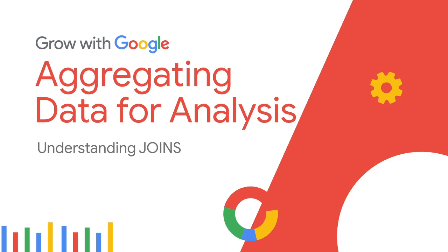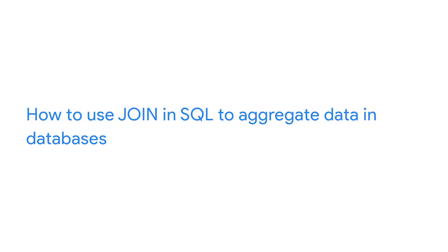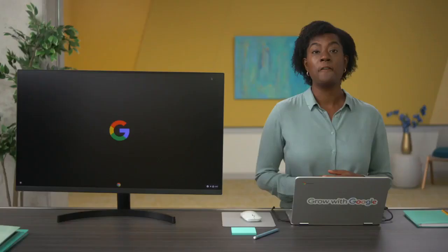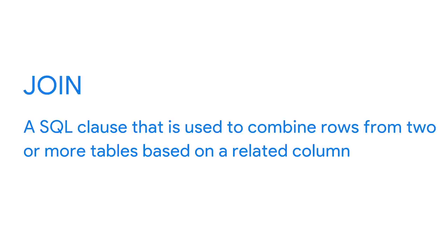We've checked out a few different tools you can use to aggregate data within spreadsheets. In this video, we'll cover how to use JOIN in SQL to aggregate data in databases. JOIN is a SQL clause that's used to combine rows from two or more tables based on a related column — basically a SQL version of VLOOKUP. There are four common JOINs data analysts use: Inner, Left, Right, and Outer.